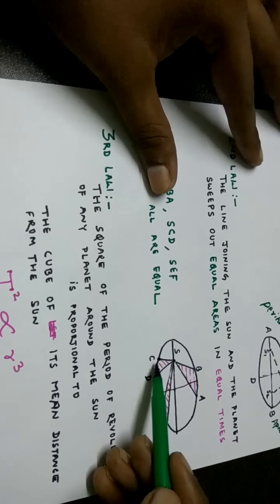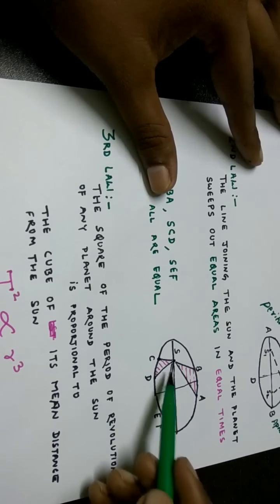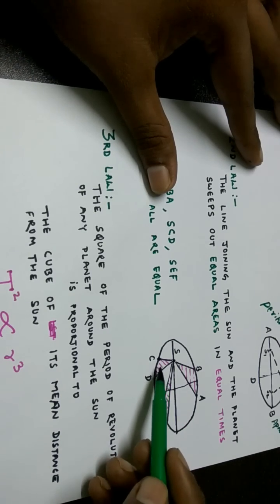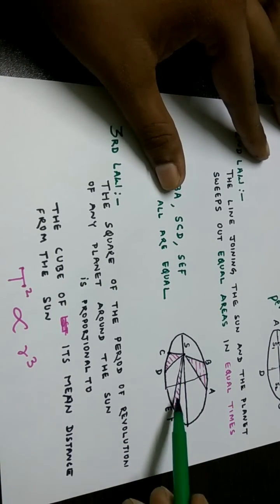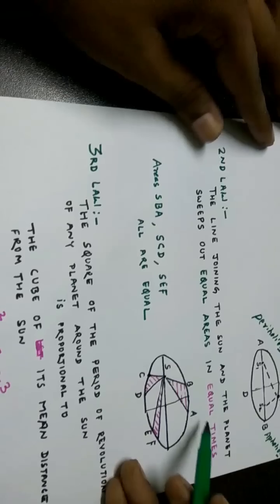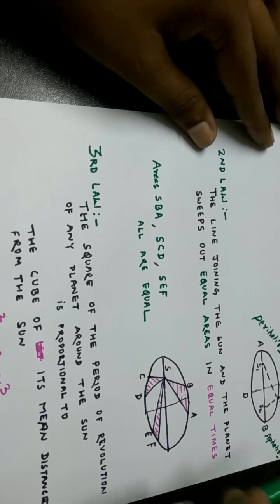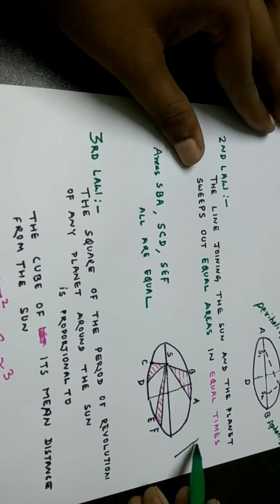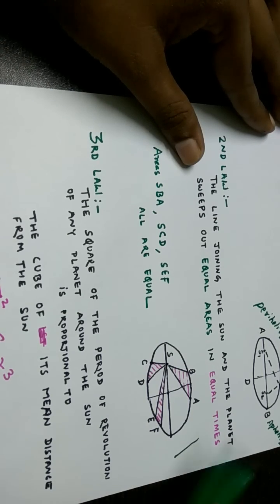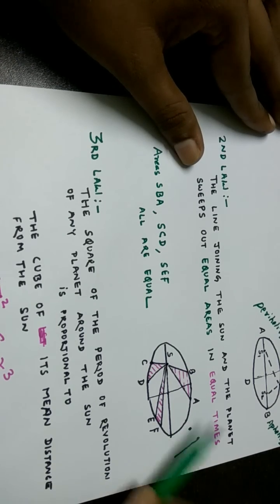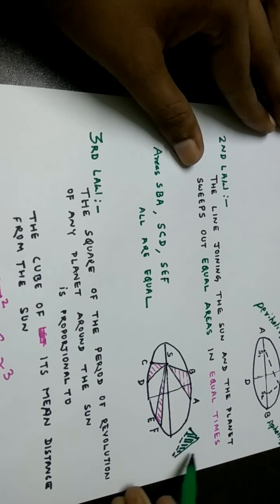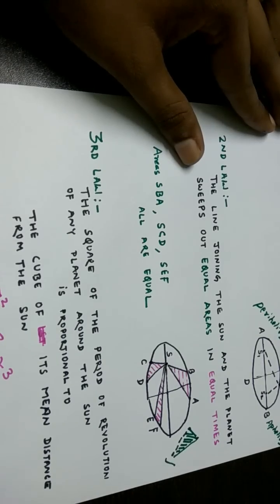Similarly, the area SCD is covered by the planet in the same time T. In all cases, the swept area will be the same. 'Sweeps out' means — if the planet is at one point and then moves to a new position, this line rotates and sweeps out some area. The shaded area shown here illustrates that concept. That is the second law.